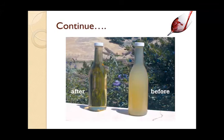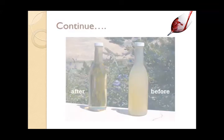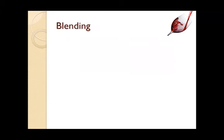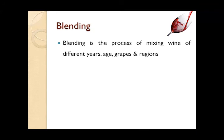Once the wine is filtered, if it's a white wine it will be clear, and if it's a red wine there won't be any leaves or particles present in it. Once filtration is done, the last process is blending. Blending is a process of mixing wines of different ages, different years, different flavors, different grapes, or maybe different regions.